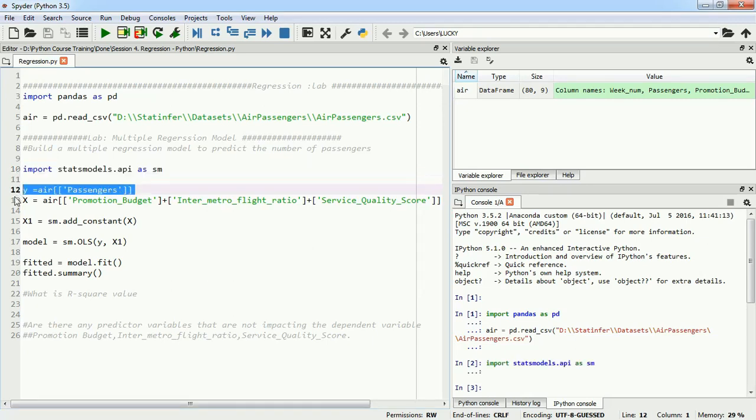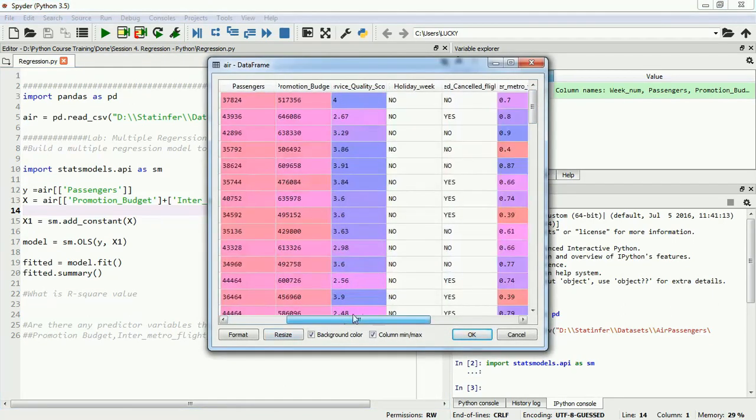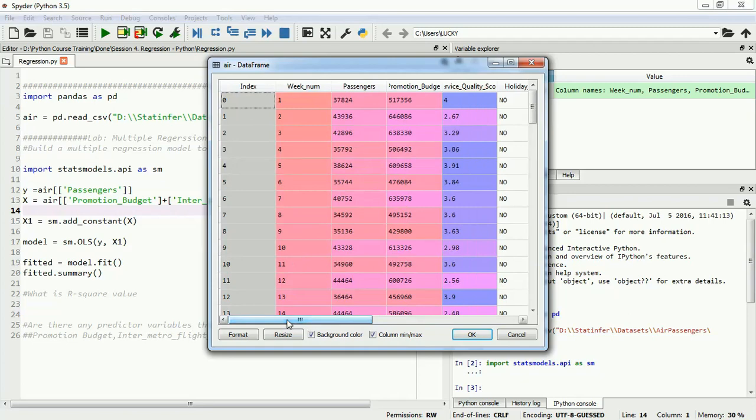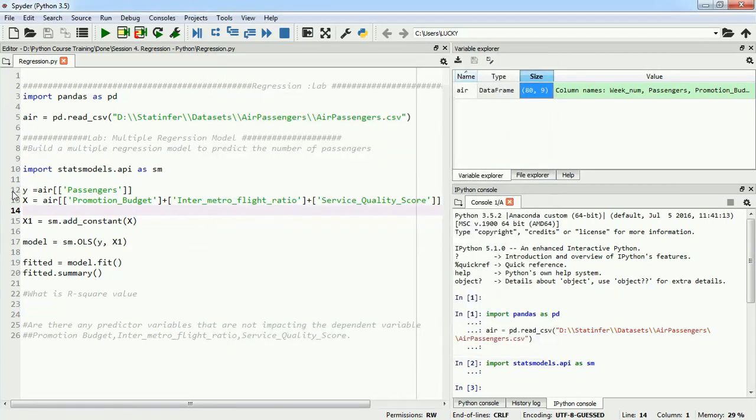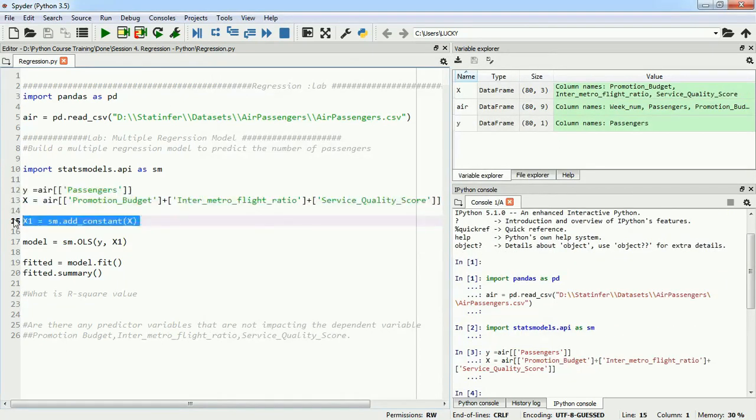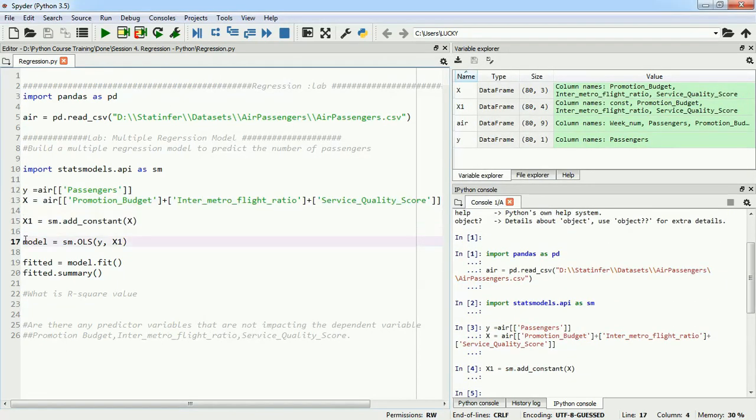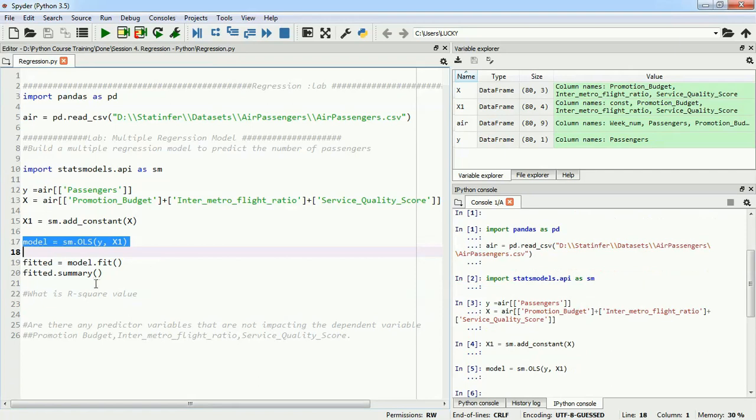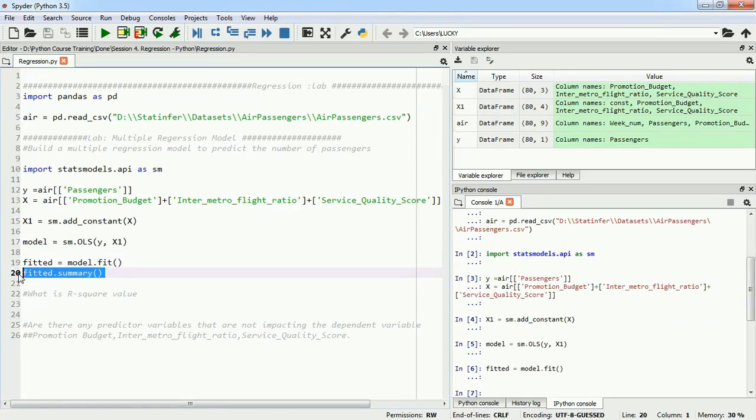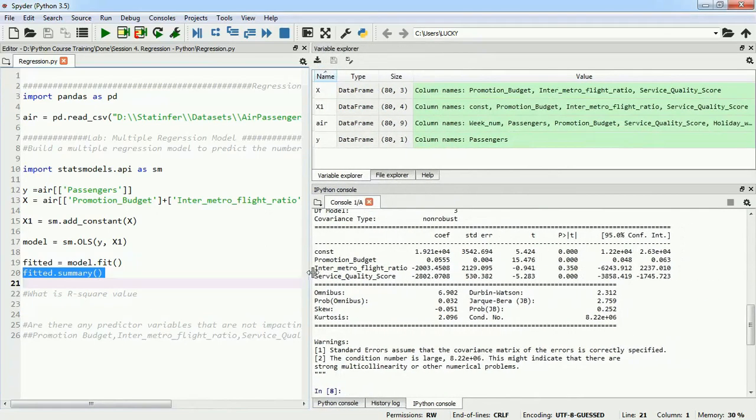I have to define my y and my x. In y, I have defined passenger, which is my dependent variable. And inside x, I am using promotional budget, inter-metro flight ratio, and service quality score as my independent variables. If we look at the dataset, we have a lot of variables. Using a few of those, we will try to build a multiple regression model. So I will define my x and y's and I will add my constant to my x variables. Now I can define my model using sm.ols where y and x would be given. Next thing, I have to fit this model. Once I have fit it, I can look at the summary of this model like this. I will zoom into it and explore it more.